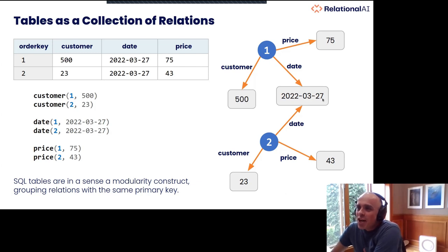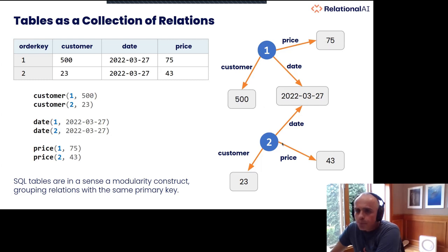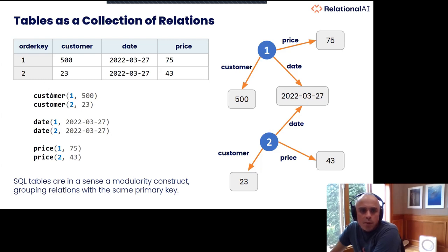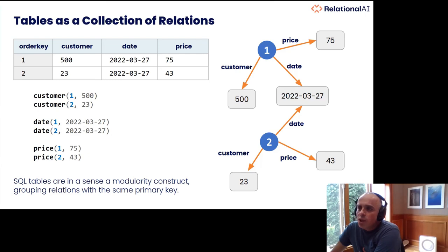If I asked you to take a table and make a graph out of it, you'd probably make the primary key into a node — order one and order two — and link it with edges to the different attributes. Mapping that back: the customer of order one is 500, the customer of order two is 23, the date of order one and two is this, and the price is 75 and 43. This is exactly how we model SQL tables — more graph-like. In a sense, SQL tables are a modularity construct that groups a bunch of relations sharing the same primary key.